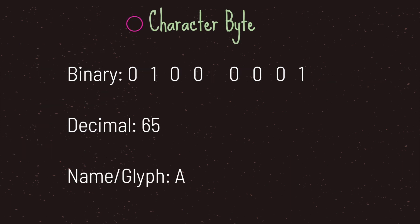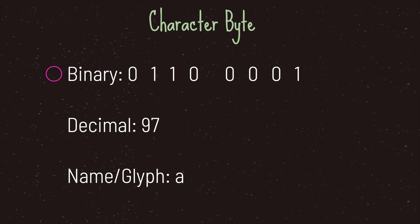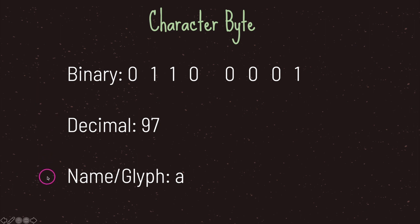Let's take a look at what a character looks like in memory. Here we have the binary value 01000000001, which has a decimal value of sixty-five and represents the capital letter A. If we flip the second-to-last zero to a one, we get 01100000001, which has a decimal value of ninety-seven — representing the lowercase letter a. This shows how character encoding translates binary into human-readable text.